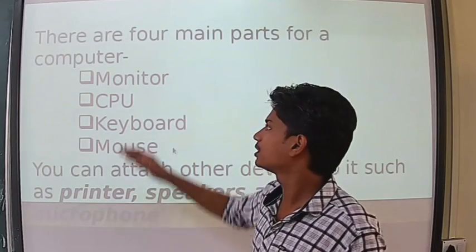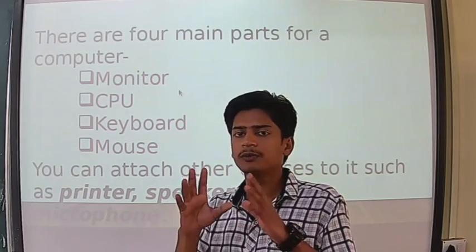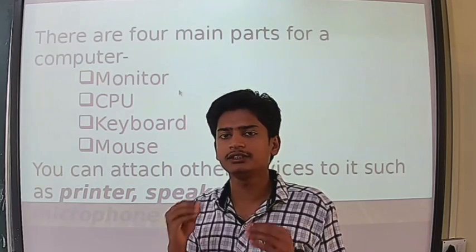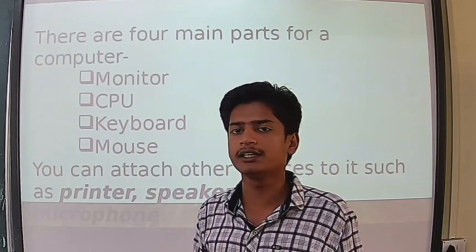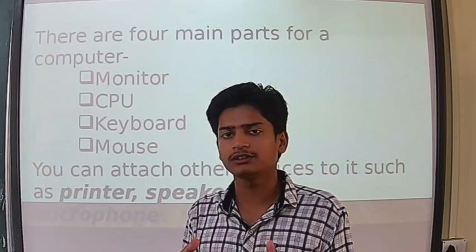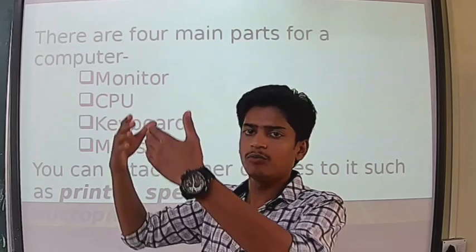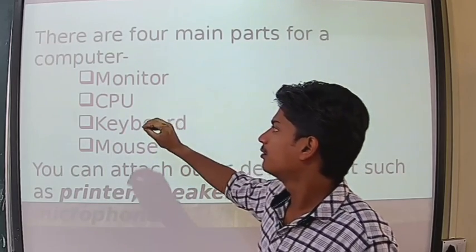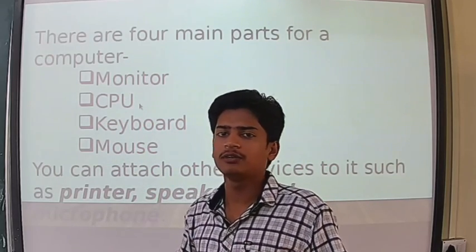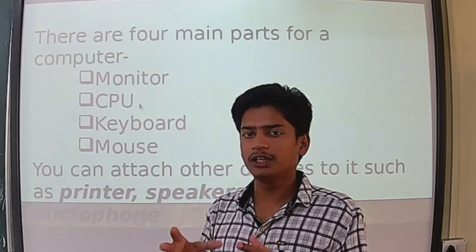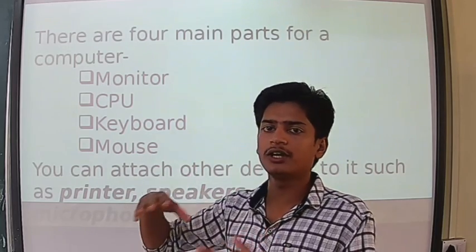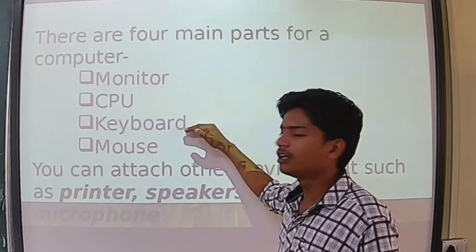First, the monitor — we use it to display things. Everything we do on the computer is displayed on the monitor: alphabets, videos, graphics, and pictures. We can also call it a display. Next is the CPU, which is the brain of the computer. All the processing of what we do happens in the CPU, and then it is shown on the display.